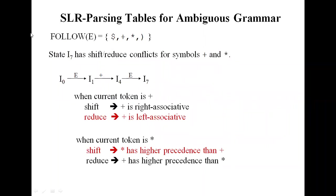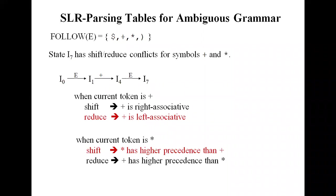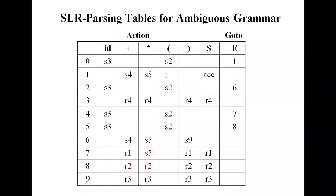For the ambiguous grammar, we have to set the rules. When you get plus, it has right associativity. When you get star, star has higher precedence than plus. This type of prioritization is required to handle ambiguous grammar. It is possible to handle ambiguous grammar by LR parsers. For right or left associativity we can set rules, and after that we can get an SLR parsing table for the ambiguous grammar.